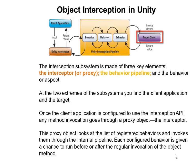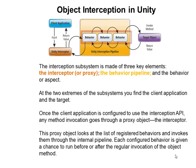Once the client application is configured to use the interception API, any method invocation goes through a proxy object — the interceptor. The proxy object looks at the list of registered behaviors and invokes them through the internal pipeline. Each configured behavior is given a chance to run before or after the regular invocation of the object method.